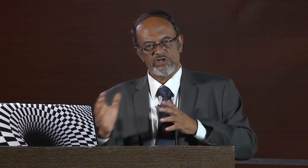Generally, this type of damping torque is given by either air damping, fluid damping, or eddy current damping. In air damping and fluid damping, we have a cylinder with a piston fixed onto the pointer system, and the cylinder chamber is filled either with air or with oil. As the pointer moves, the piston goes in or out of the chamber, acting against the fluid — whether air or liquid — which gets compressed in one direction or the other. The pressure change because of this compression provides the damping. Since this compression happens during both directions of piston movement, the oscillations and overshoots get drastically reduced.